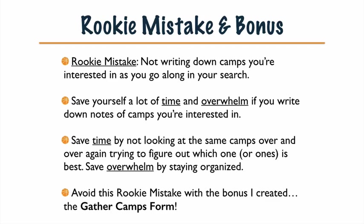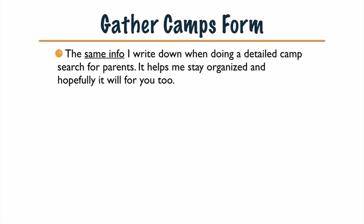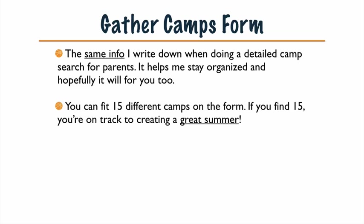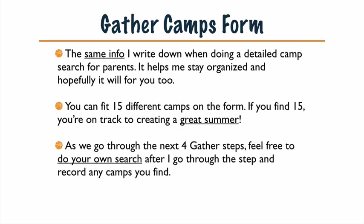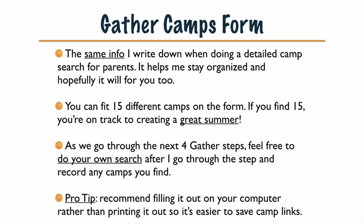Write them down so you don't look over them over and over again, and you're going to save overwhelm by staying organized. Avoid this rookie mistake. And this is very convenient — to avoid this rookie mistake, I created the Gather Camps form. The Gather Camps form is the same info I write down when doing a detailed camp search for parents. It helps me stay organized, and hopefully it will for you too. You can fit 15 different camps on the form, which is great. Definitely don't need all those camps, but if you do find 15, you're on track to creating a great summer. Pro tip: recommend filling it out on your computer rather than printing it out, because it will be easier to save the links — you can copy and paste them right into the form.